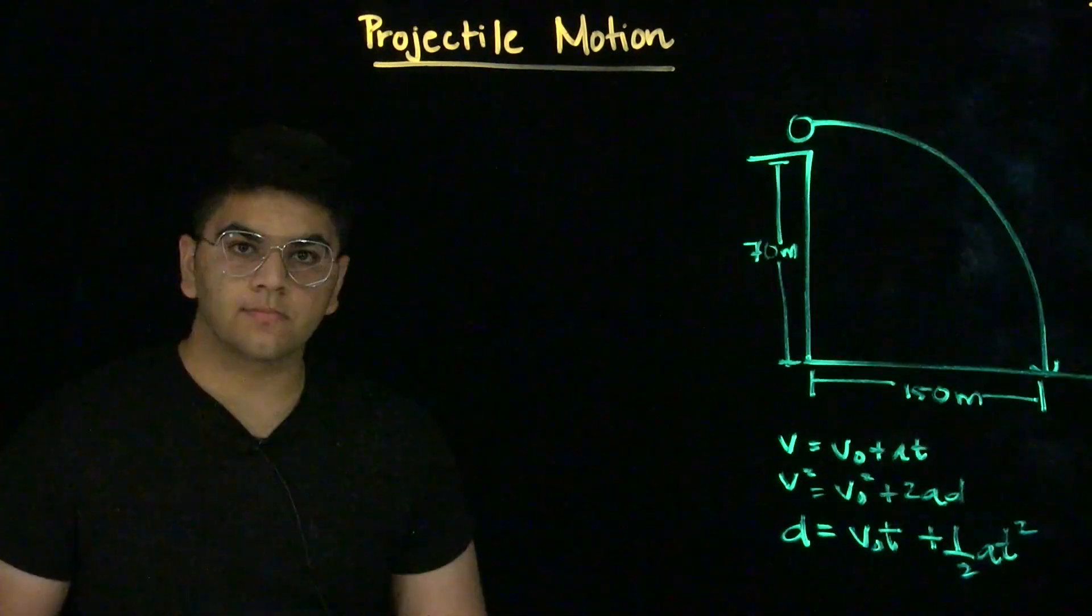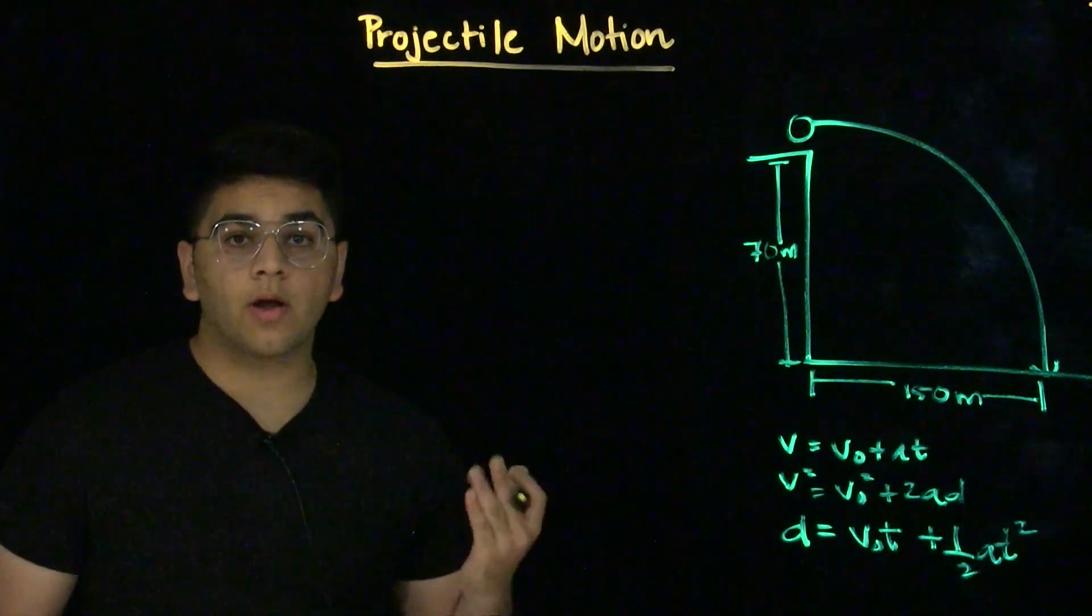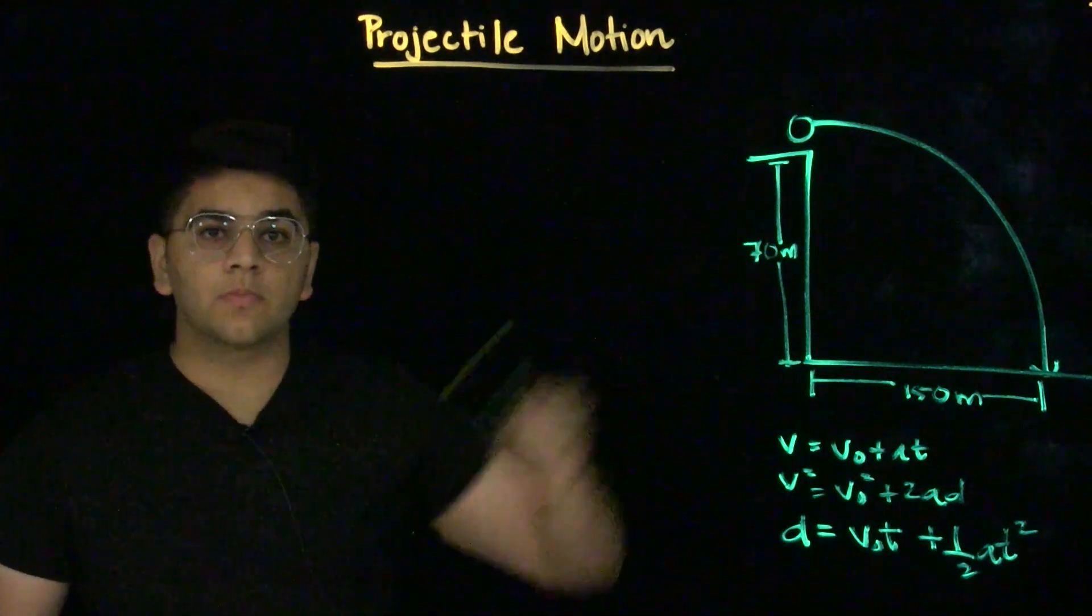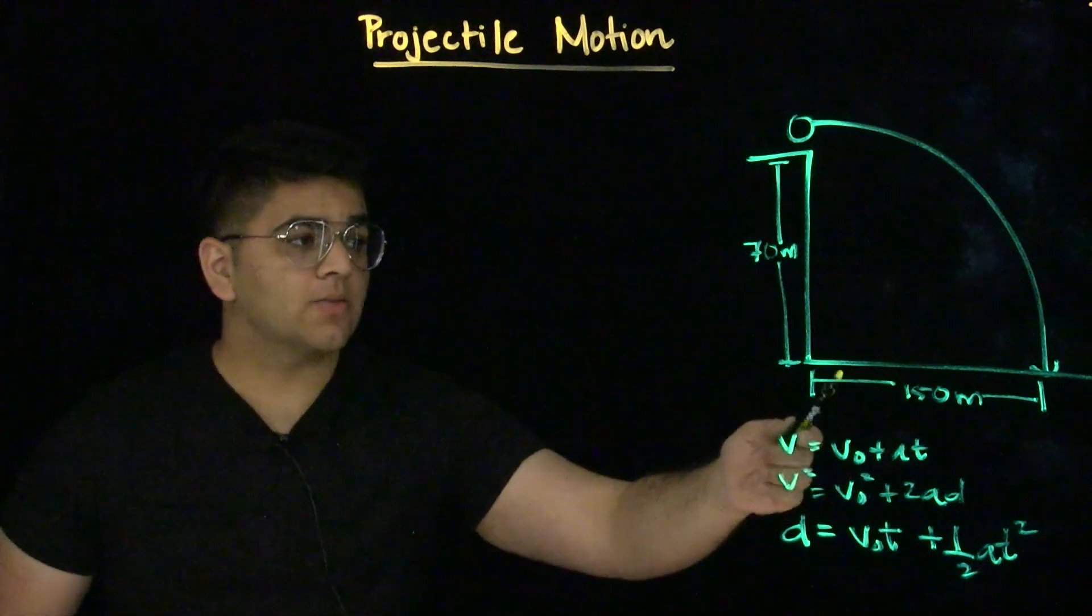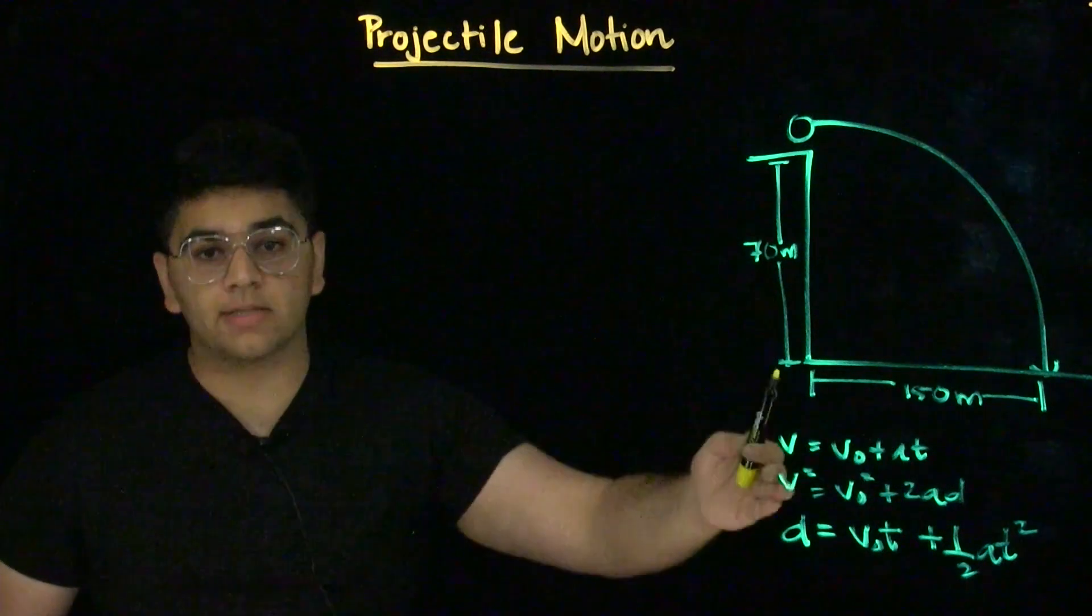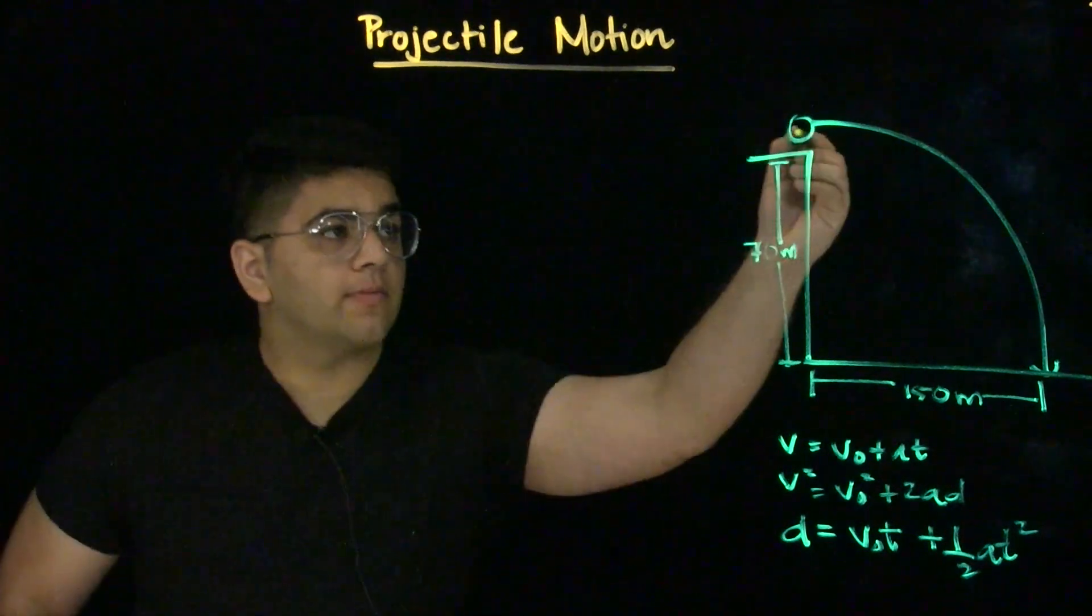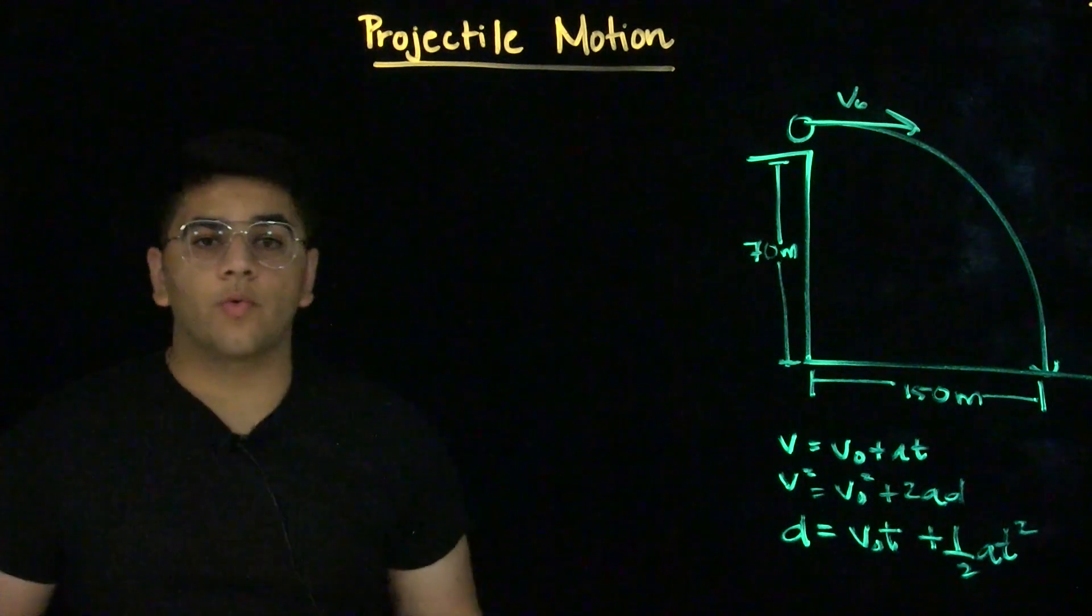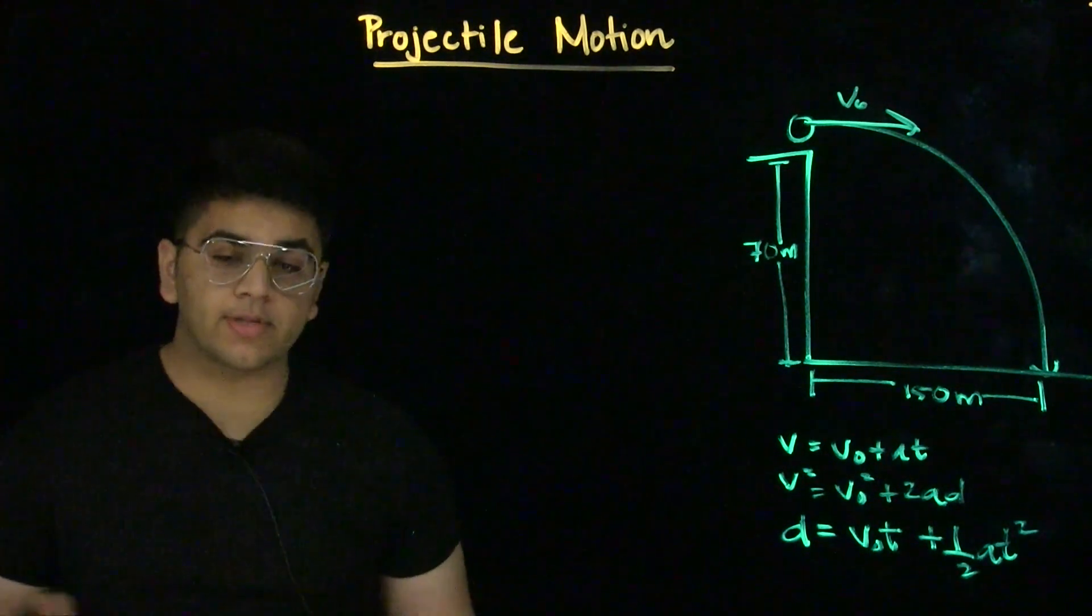Now, let's look at an example problem. Let's say we take a rock and we throw it horizontally off a cliff that is 70 meters tall, and when the rock lands on the ground away from the base of the cliff, it lands 150 meters away from the base of this cliff. I want to know what the horizontal velocity is of the rock when it is thrown from the top of the cliff. How do we approach this kind of problem?